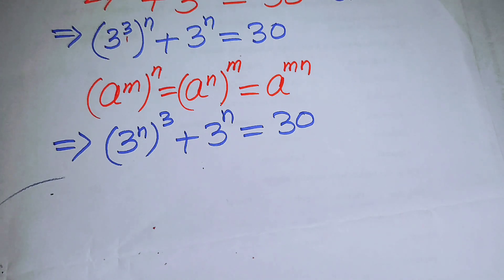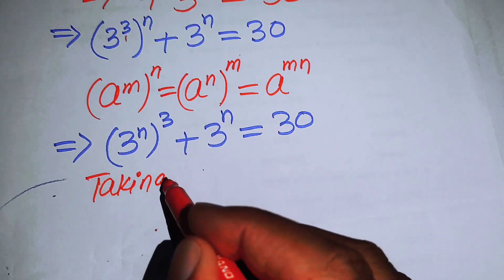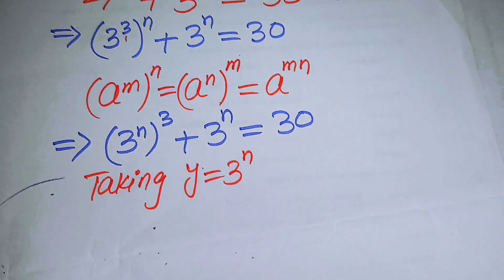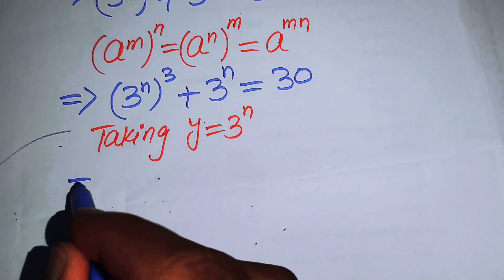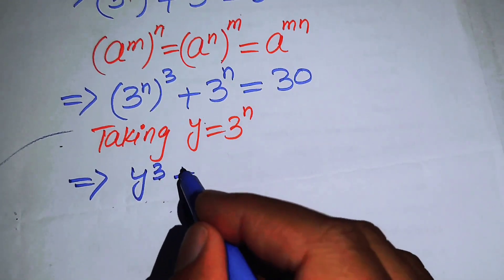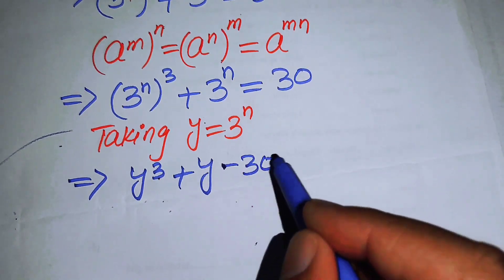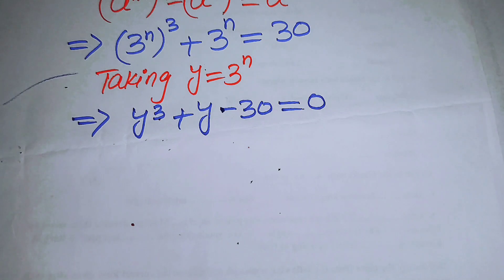In the next step we convert this exponential equation into cubic form by taking y equal to 3 to the power of n. Then the equation becomes y cubed plus y, and moving 30 to the left hand side gives y cubed plus y minus 30 equals 0.